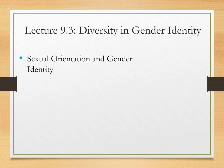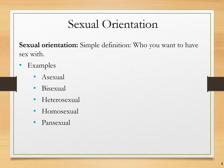Hey everyone, this is lecture 9.3, Diversity in Gender Identity. The main thing we're talking about here is sexual orientation and gender identity, but also all of the phenomena surrounding those concepts. The simple definition of sexual orientation is who you want to have sex with, or how you do or don't want to have sex.